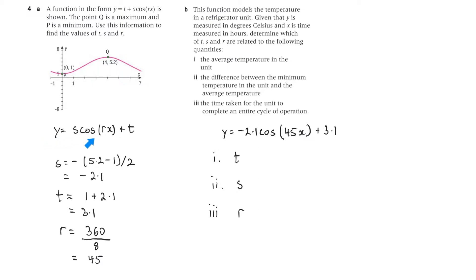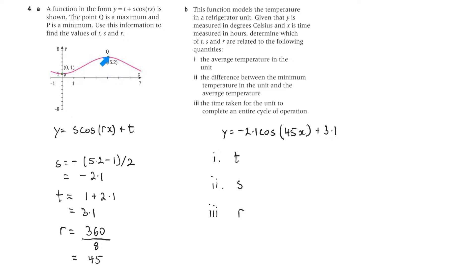We've got this function here: y equals s cosine rx plus t. To find s, it's the difference between the y values. The y value at the peak is 5.2 and the y value at the trough is 1. So the distance between the peak and the trough is 5.2 minus 1, which is 4.2. Then we want to find the midpoint — the midpoint is going to be 2.1.